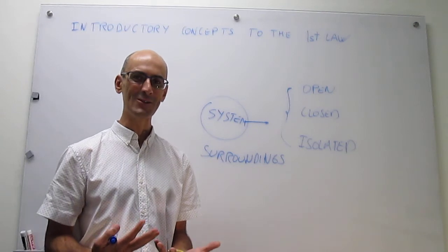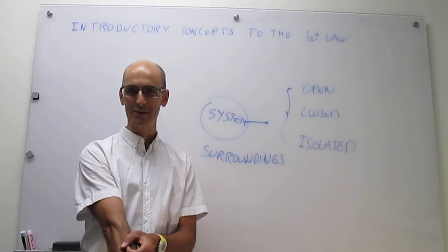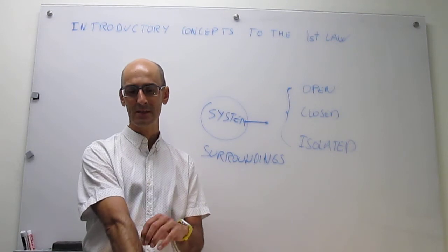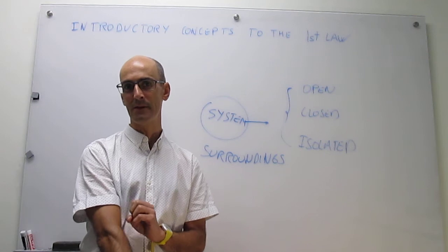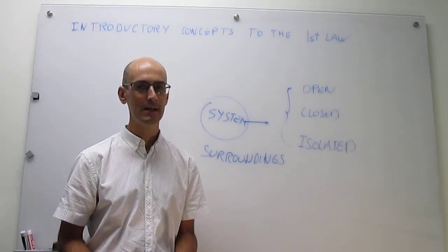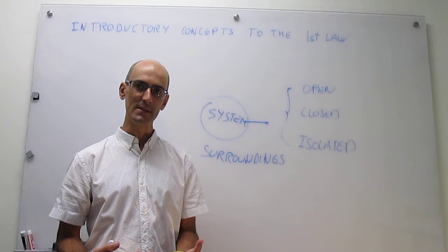But there's also mass transfer. Again, if we go back to the sweating example, when you put droplets of water in your skin, that water is evaporated and ends up in the surroundings. So you are also transferring mass. So that's what an open system is.